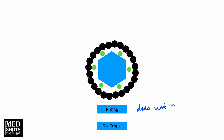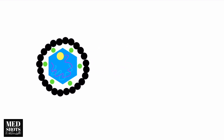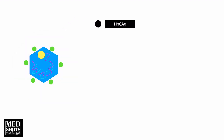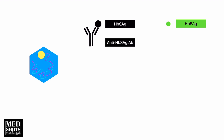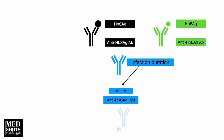We have the partial double-stranded DNA, the S antigen, the E antigen, and the HBsAg antibody (anti-HBs). We also have anti-HBe antibody, and anti-HBc antibody which is divided according to infection duration into anti-HBc IgM and anti-HBc IgG.